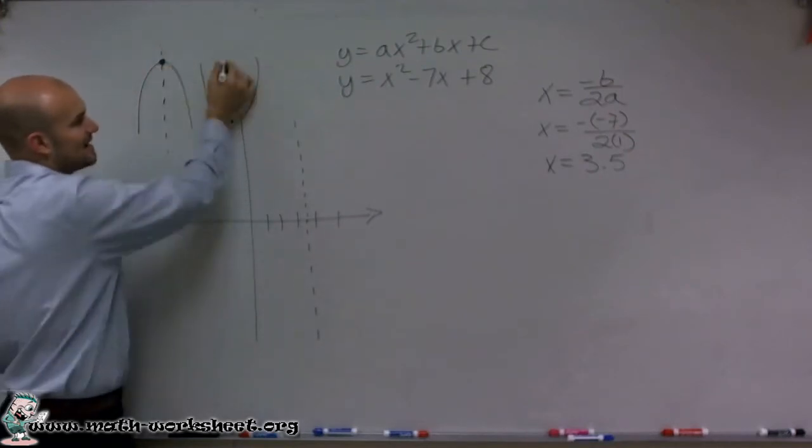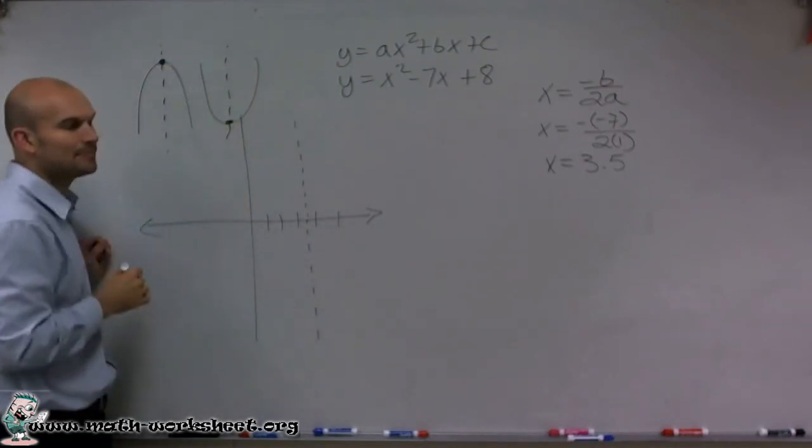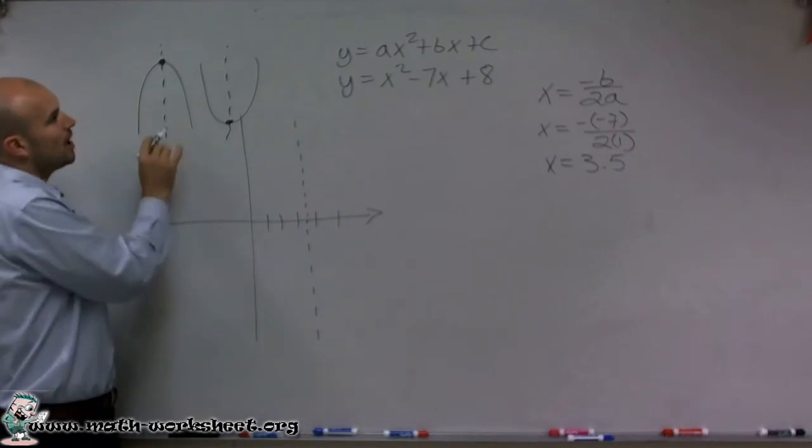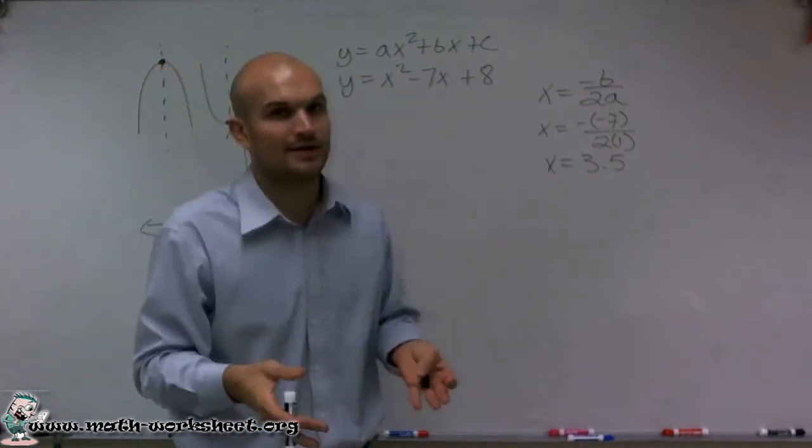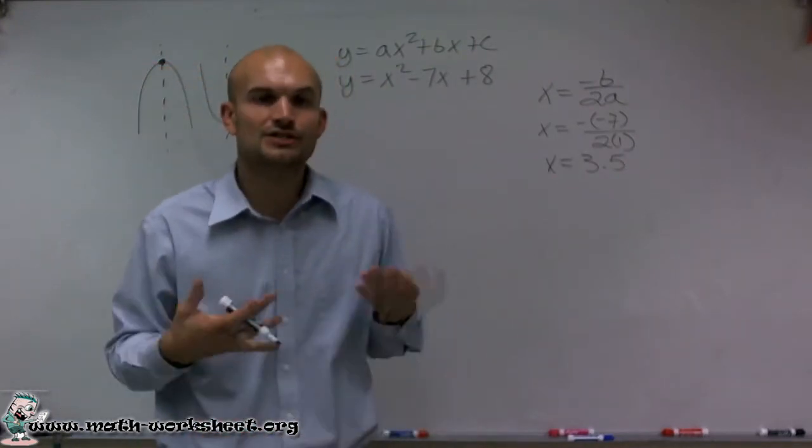What's so important about the vertex is not just knowing that it's at the top or the bottom of a parabola, but also the line of symmetry goes to that point. Once you determine the line of symmetry, you want to determine the vertex.